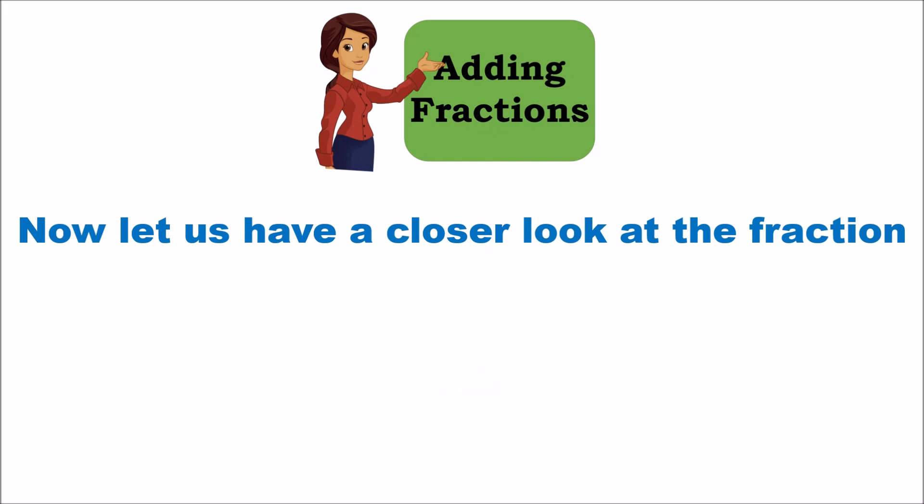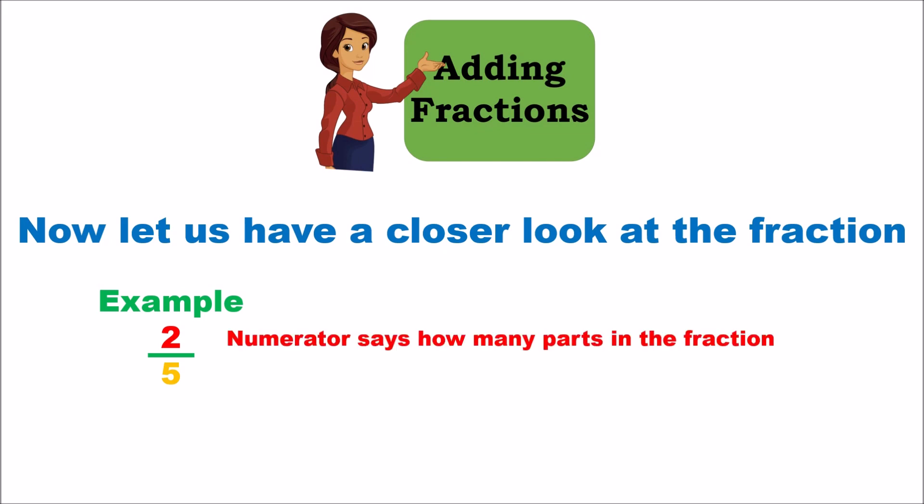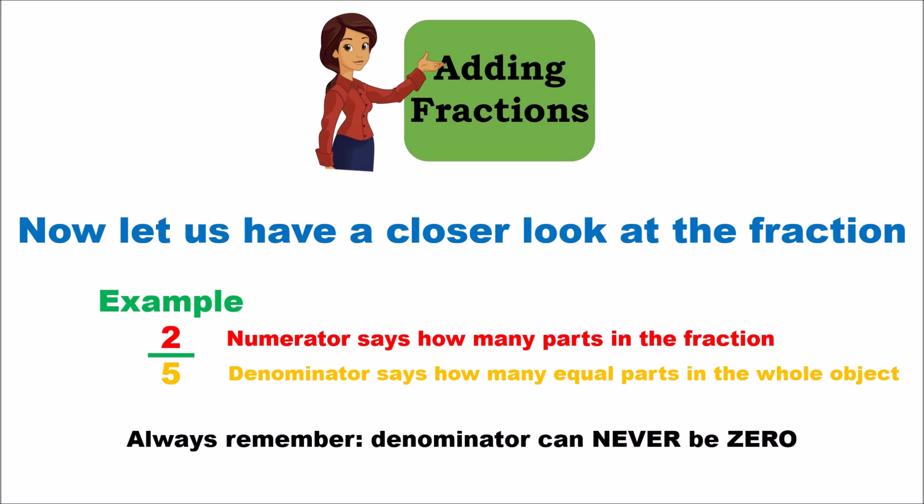Let's look a little closer at a fraction using the same example, 2 by 5. The number at the top is called the numerator, and that tells you how many parts you're taking out of the whole object that you divided into pieces. The bottom number is the denominator, and that tells you how many pieces you made. So in this example, you took an object, divided it into 5 equal parts, and of those 5 equal parts you took 2.